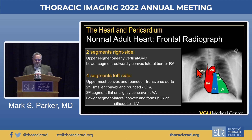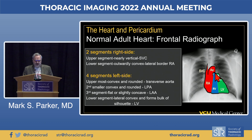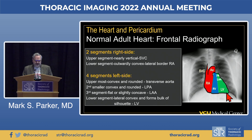Along the left side of the cardiomediastinal silhouette, we have four segments or moguls. The largest is the aortic knob or transverse aorta. Just below that, a smaller focal convexity is created by the main pulmonary or left pulmonary segment. The third smaller segment is usually flat or somewhat concave, created by the left atrial appendage. The lower segment is laterally convex and forms the lateral margin, most of which is created by the left ventricular chamber.